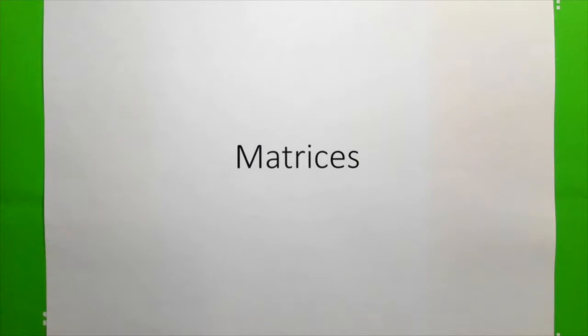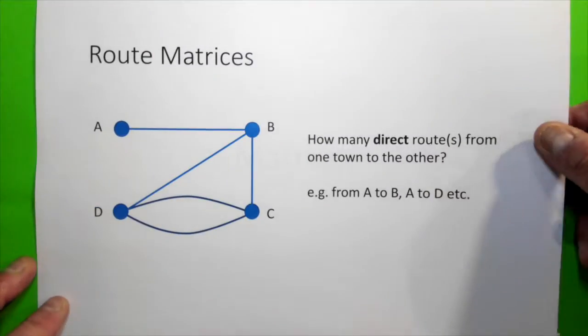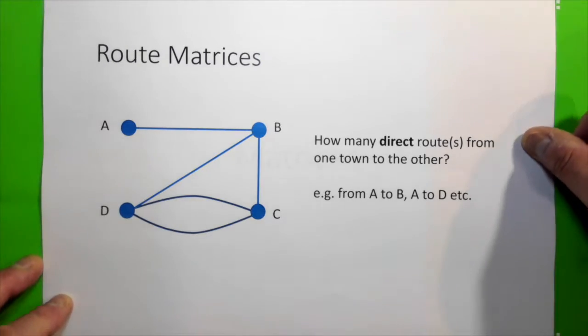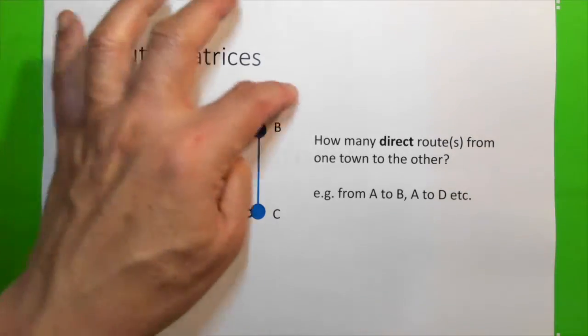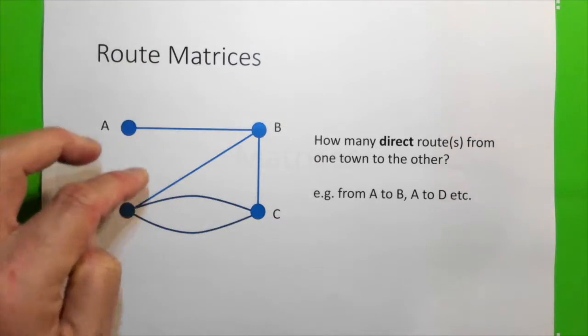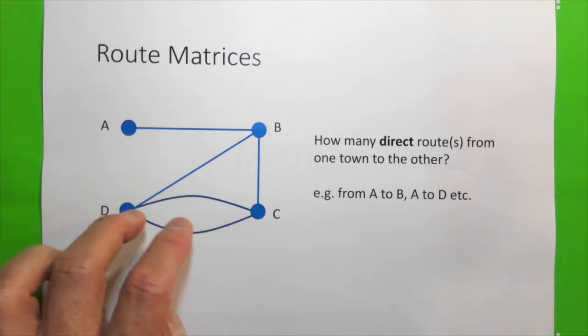In this last lesson of matrices, we are going to look at some route matrices. Now, if you look at this, this is a network of roads joining four different towns.